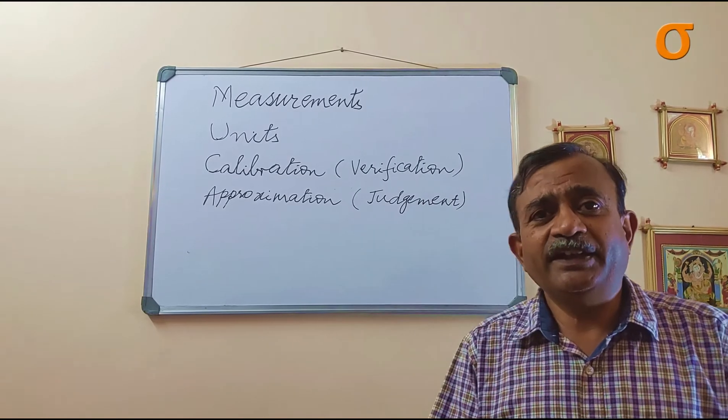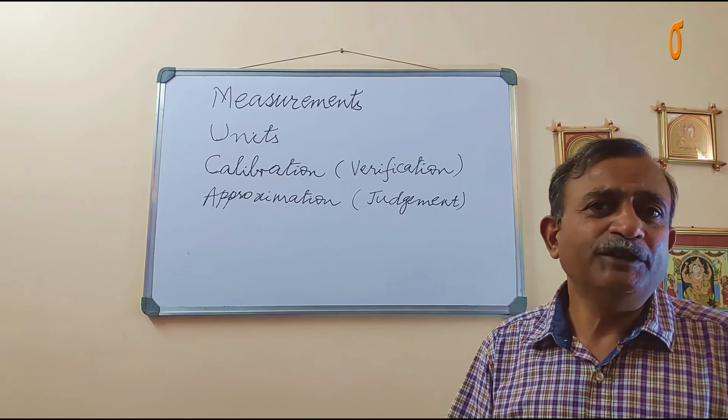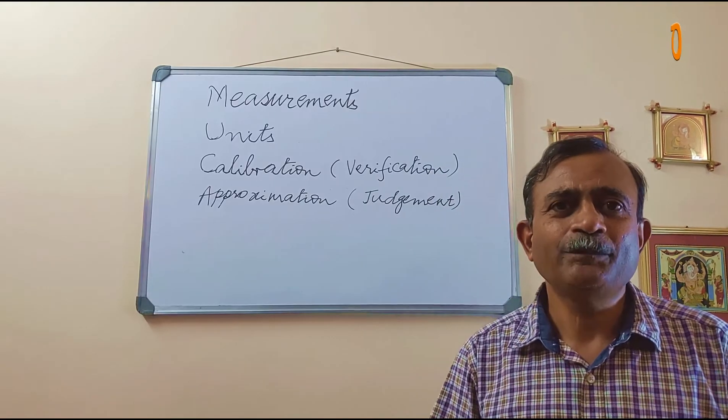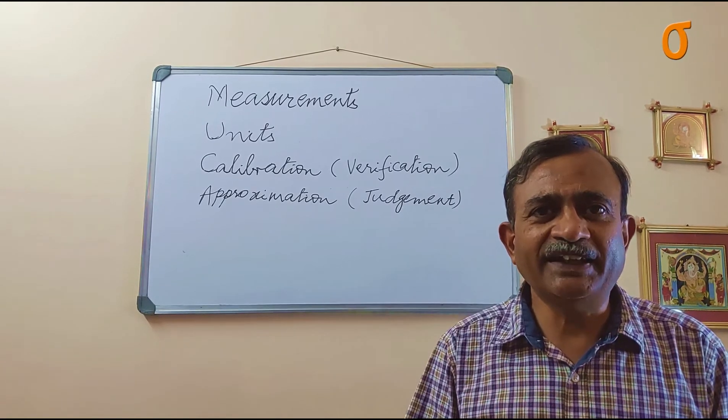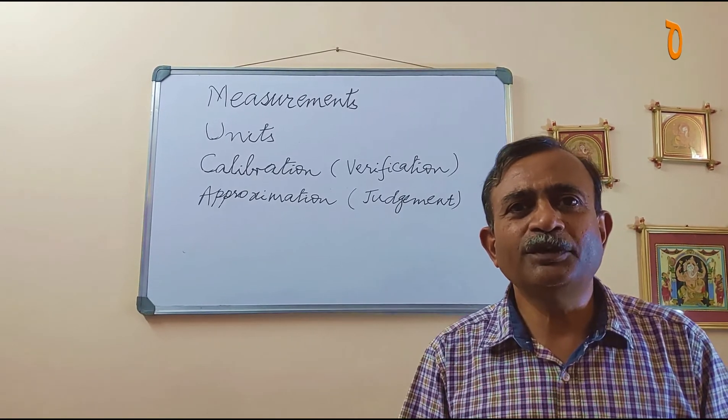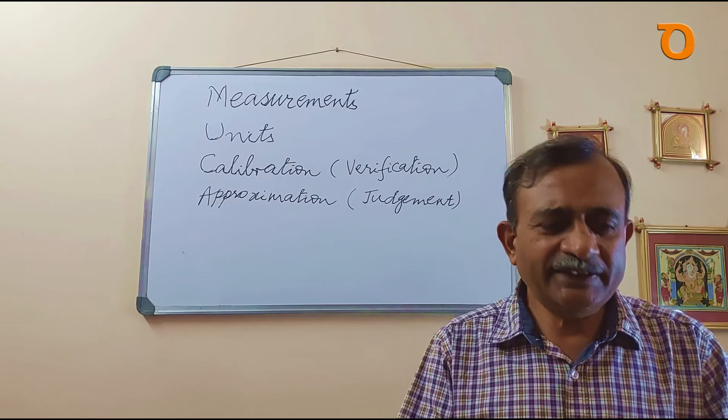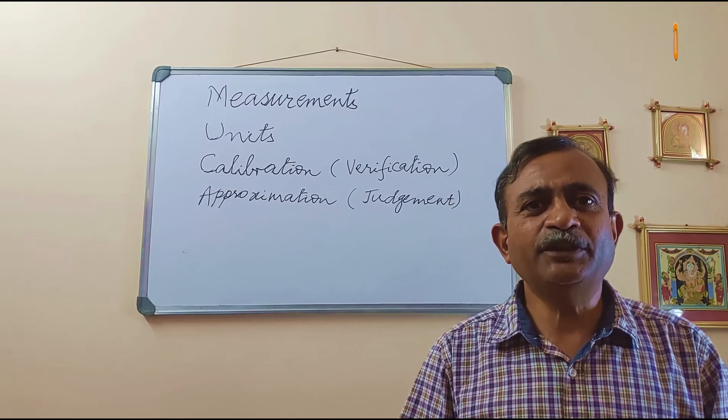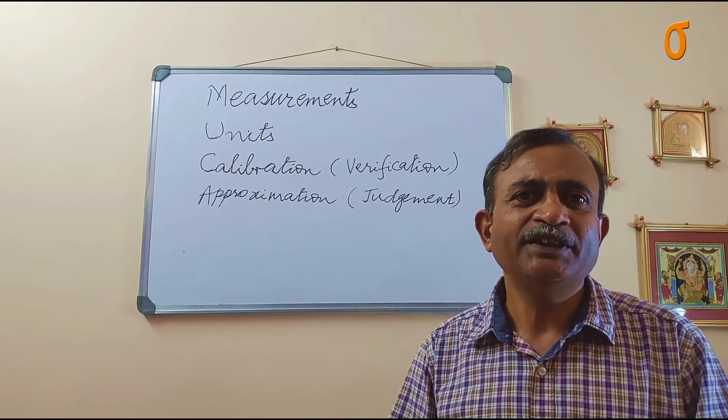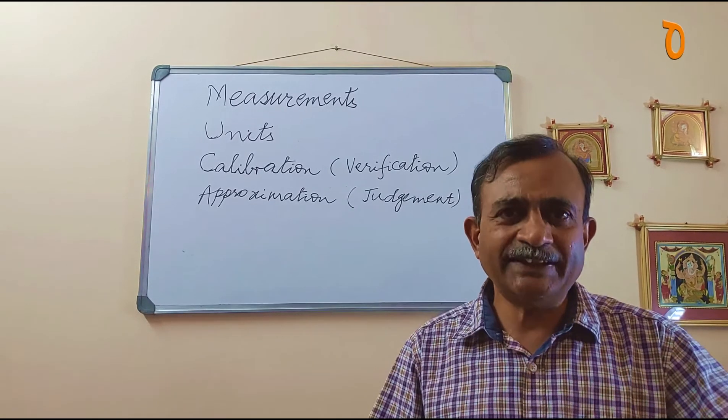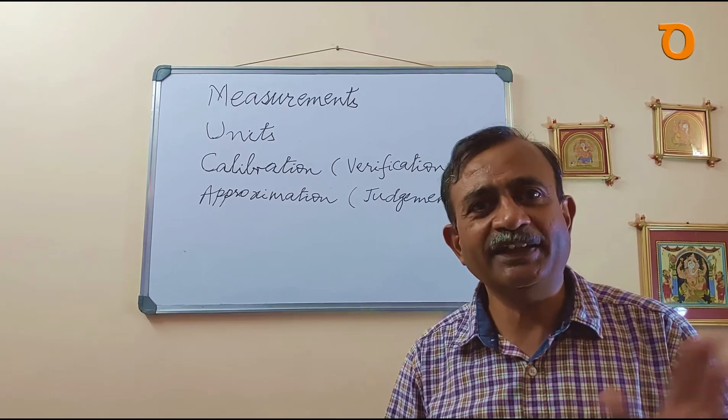In our day-to-day life, not everywhere we use tools. Most places we use approximations. Say when we go to a ground and play cricket and we have to put the stumps, we take the pace 22 yards. We know is the length. We may not be having a measuring tape at that time, so we make use of our steps and put the stumps there to play cricket.